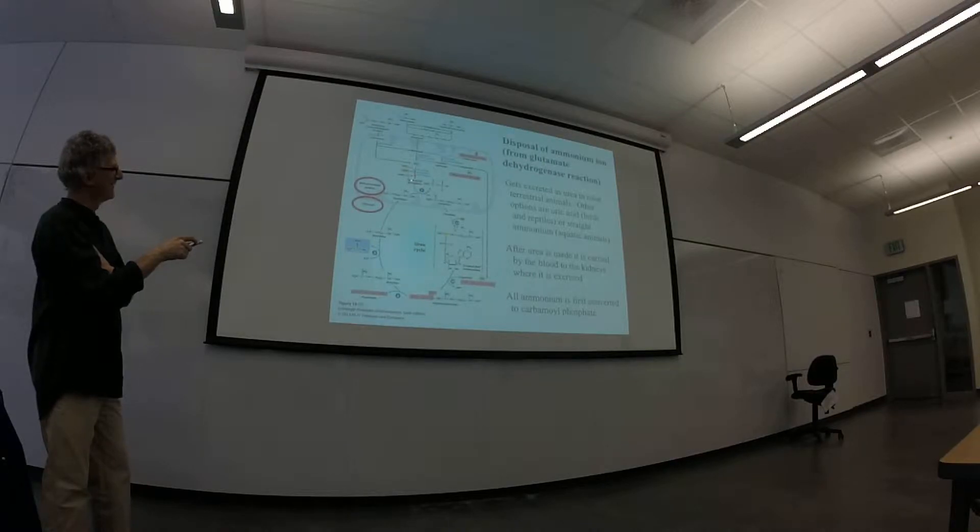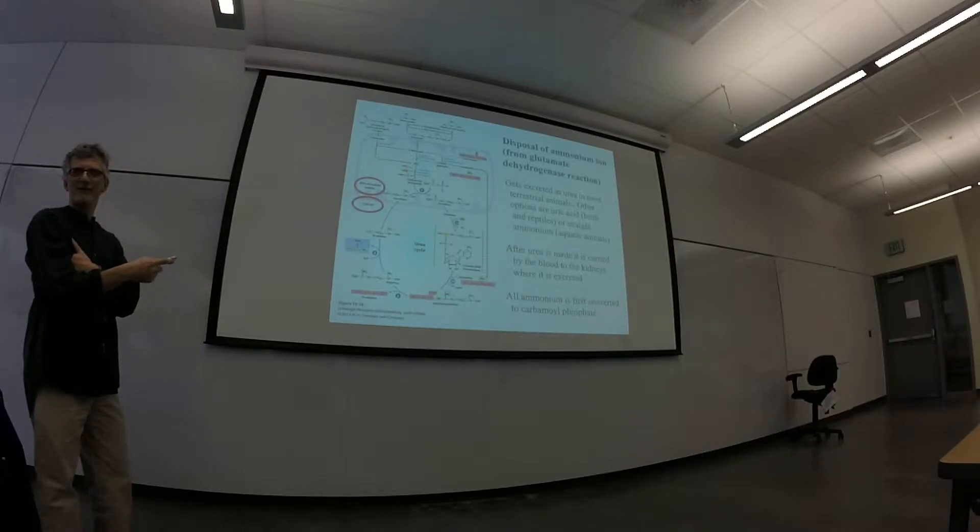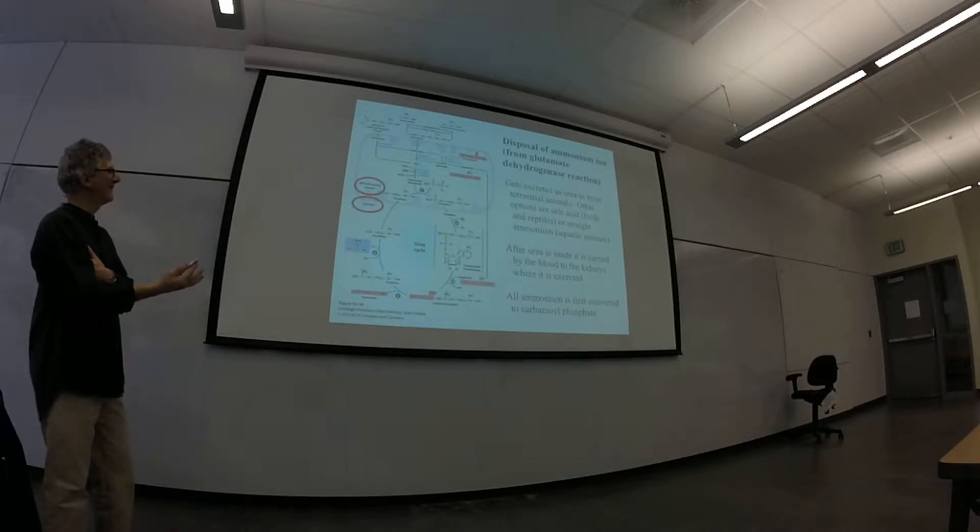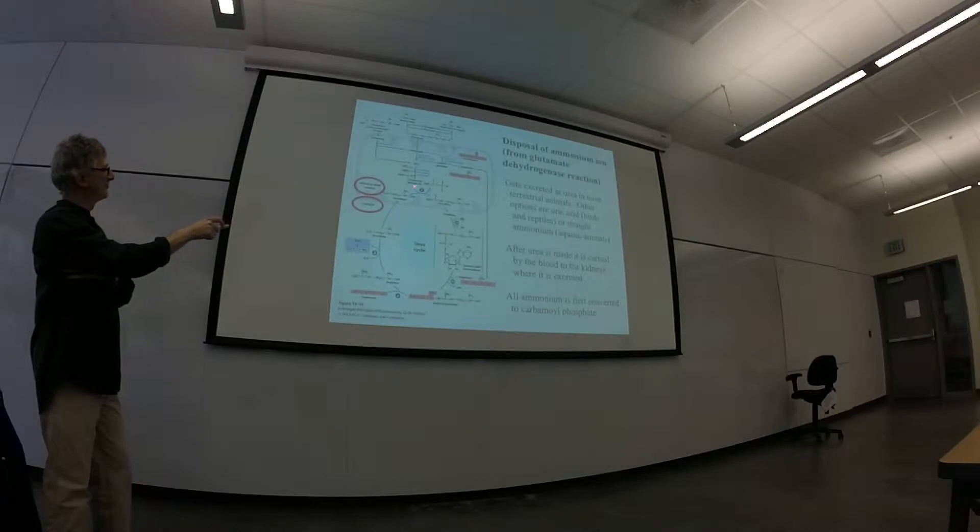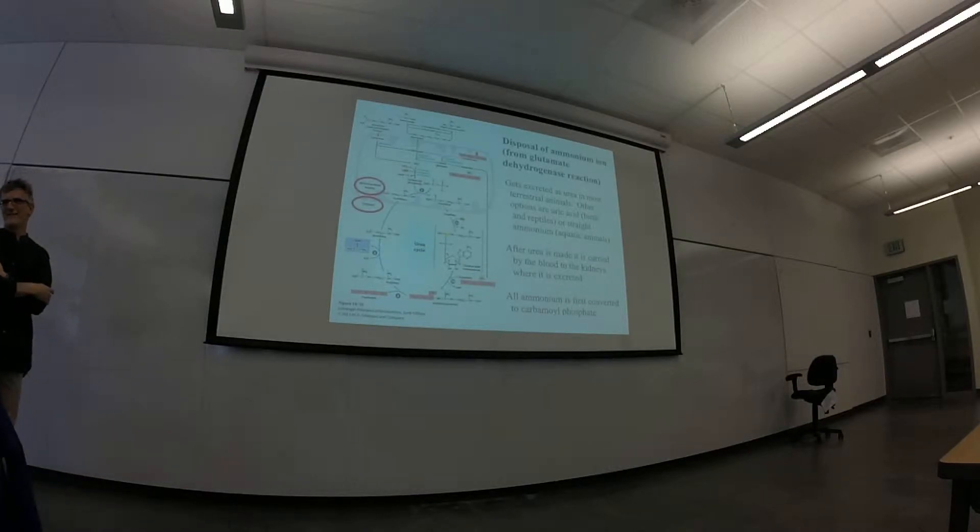I shouldn't have said that. So it takes two to make the necessary precursor to go into the urea cycle. So if I talk about it that way, then I'm right. This is a precursor. I'm not trying to split hairs. I'm making sure I understand. Other questions?